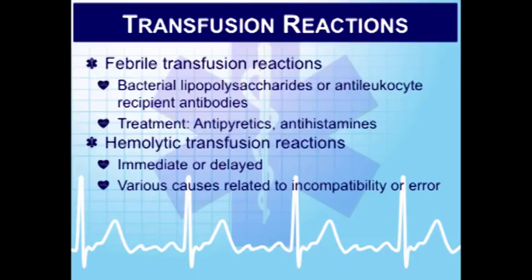A febrile reaction occurs when antibodies already in the patient's blood react to donor white blood cells. Temperature can reach up to 104°F. Symptoms include chills, headache, facial flushing, chest tightness, tachycardia, and flank pain. Treatment includes antipyretics for the fever and antihistamines to counteract the reaction.